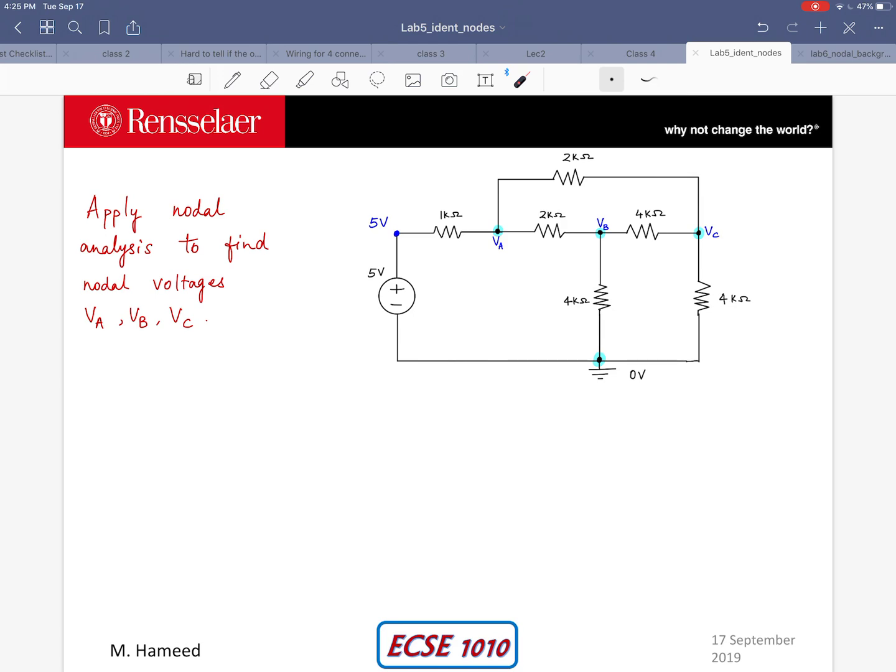In order to do that I'm going to use Kirchhoff's current law and I have three essential nodes in this example: A, B and C. So I'm going to apply KCL at each of these nodes to obtain three linear equations and solve them either by MATLAB or calculations by hand to find my unknowns which are the three nodal voltages.